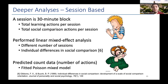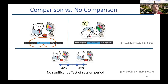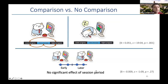We compared sessions where students performed a comparison event versus sessions where they did not. Based on prior findings, we hypothesized that performing a social comparison event would increase engagement with learning activities. We found similar results: when students performed a comparison change within a session, they engaged more with the system and accessed more learning content compared to sessions where they made no comparison change.